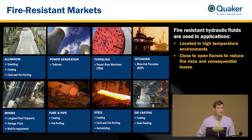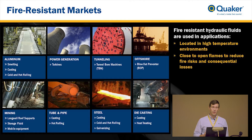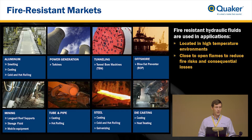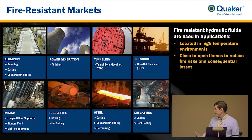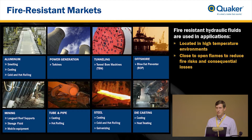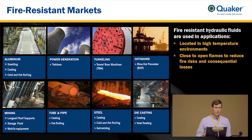There are quite a few industries where, due to the nature of the work — whether it's very hot materials, a hot environment, or in the steel industry with molten metals — there's an enhanced fire risk. In those industries it's commonplace to use fire resistant hydraulic fluids. Some examples include power generation with steam turbines, tunnel boring machines, and underground mining due to combustible coal or dust.